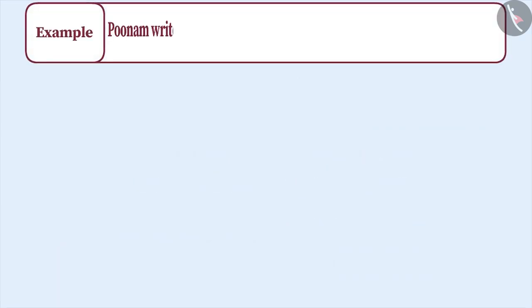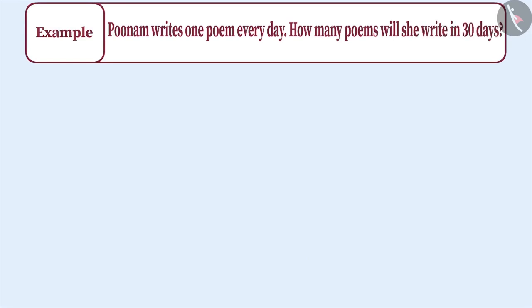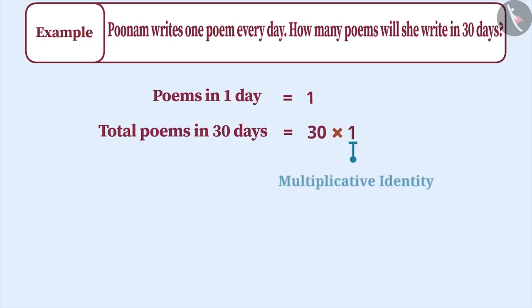Next example, Poonam writes one poem every day. How many poems will she write in 30 days? Poonam writes one poem every day. Therefore, in 30 days, she will write 30 times one poem. 1 is the multiplicative identity.